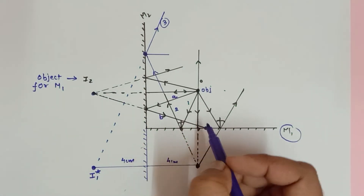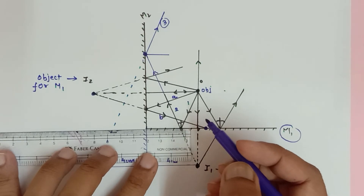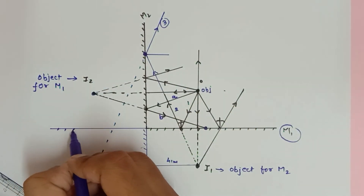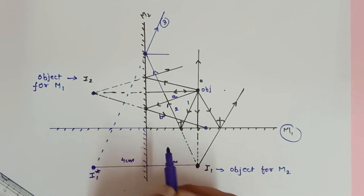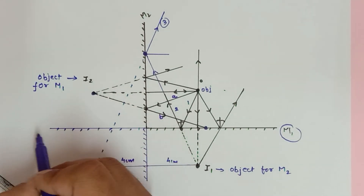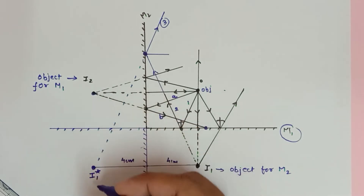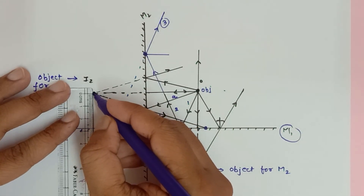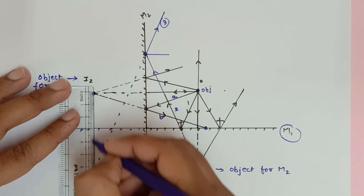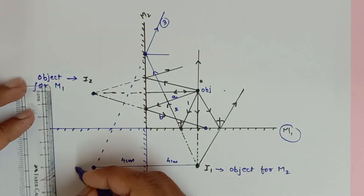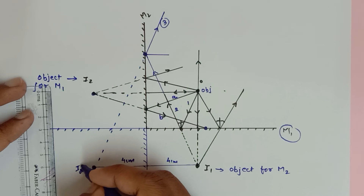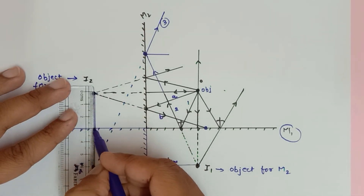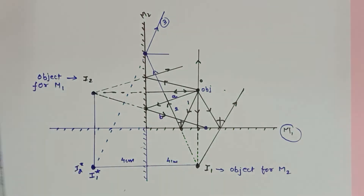Under that situation I can extend mirror M1 behind. This is the object I2, this is the mirror, so the image must be formed behind the mirror at the same distance. This distance is approximately three centimeters, so three centimeters behind I get my image I2-star, which coincides with I1-star.